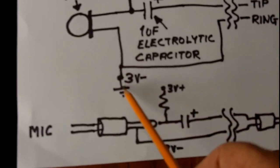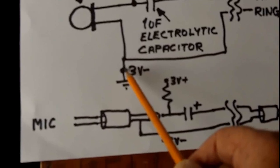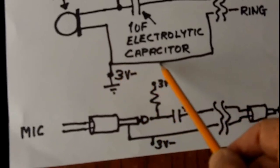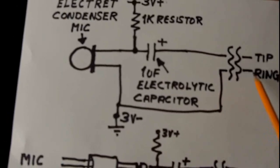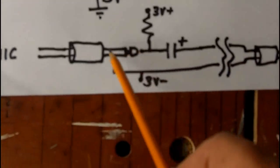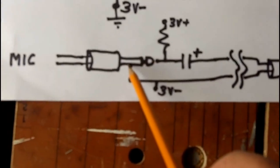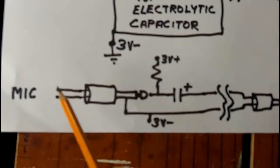You just come down to the minus side of the 3 volt battery, then that connection goes straight through to the ring of your jack plug which would be this part here.